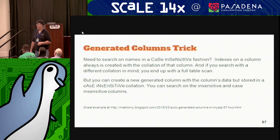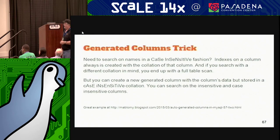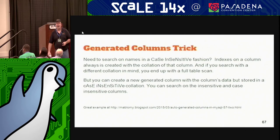Another neat feature with generated columns: if you need to do case-insensitive searches of last names, indexes on a column are always created with the collation of that column. So if you just index the last name, you get that collation. You can create a new generated column with the column's data stored in a case-insensitive collation. I've used this trick twice since this blog post came up.